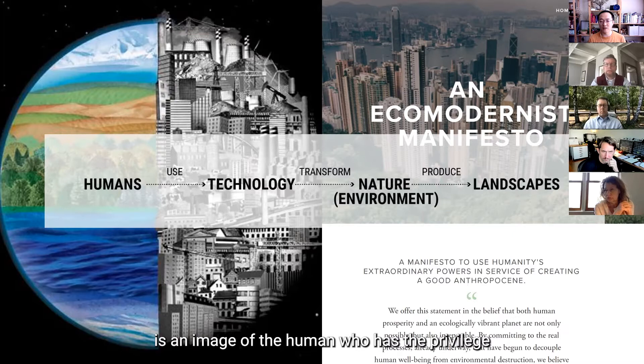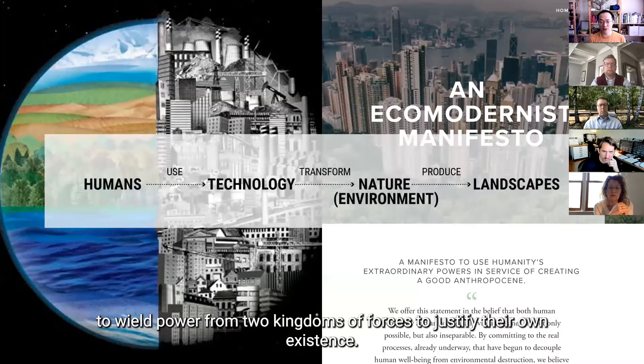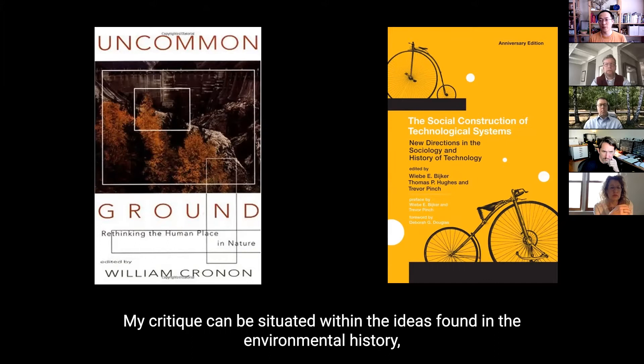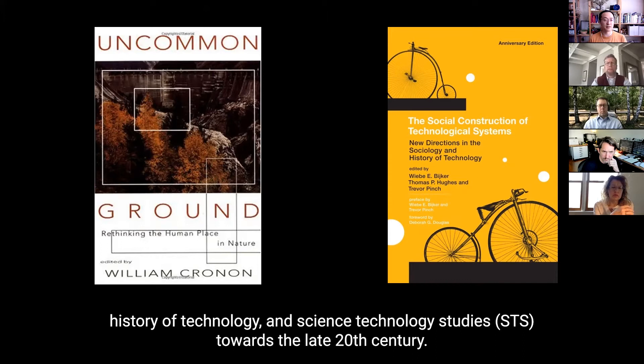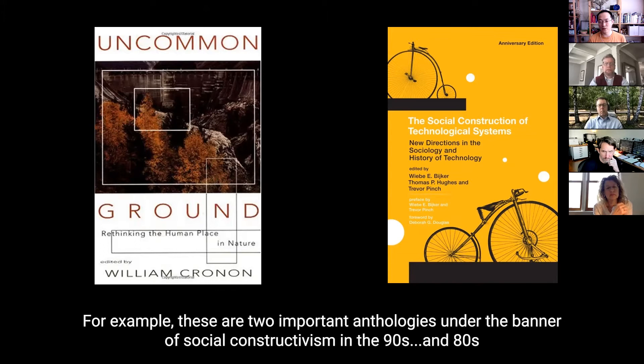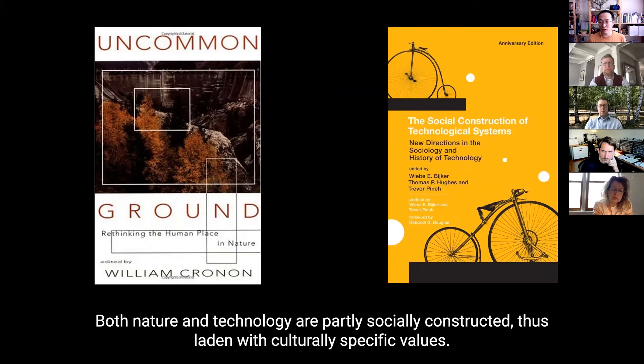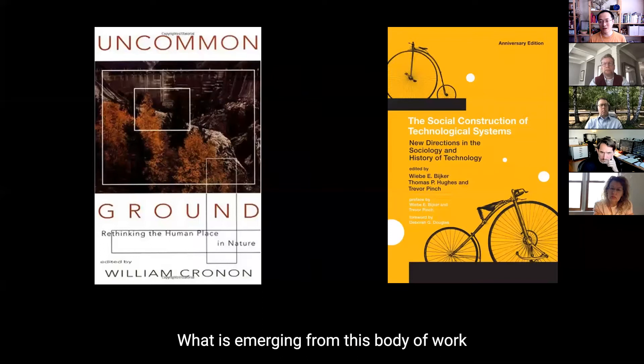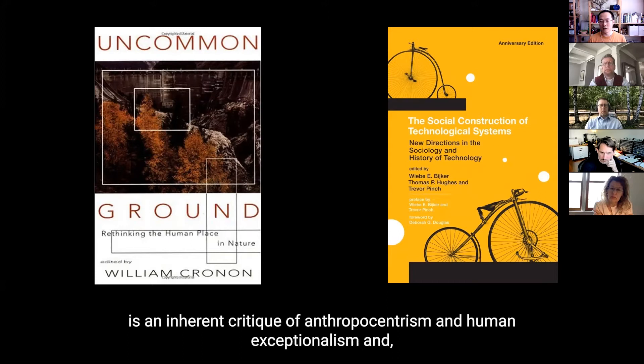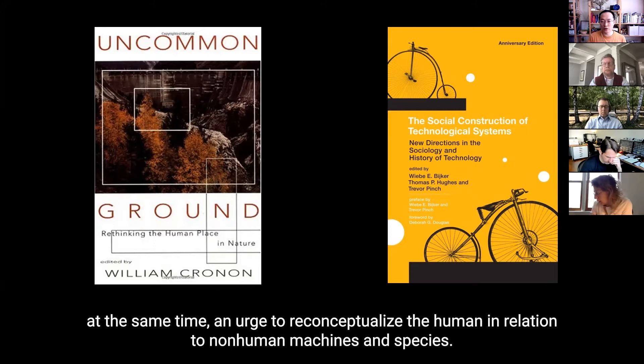Most importantly, what is emerging within these narratives between nature and technology is an image of the human who has the privilege to wield power from two kingdoms' forces to justify their own existence. So my critique can be situated within this idea found in environmental history, history of technology and science technology studies towards the late 20th century. And for example, these are two very important anthologies under the banner of social constructivism in the 90s and 80s. Both nature and technology are partly socially constructed and thus laden with culturally specific values.